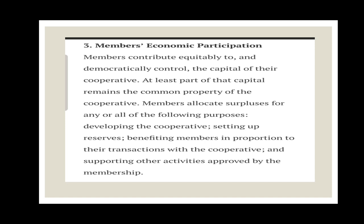The third principle is member economic participation. Cooperative societies are established for giving financial assistance to agricultural development, and for that they require funding. Every member should contribute some amount, and the contribution should be equitable. Members contribute equitably to the democratic control and capital of their cooperative. At least part of the capital remains the common property of the cooperative. Members allocate the surplus for the following purposes: developing cooperatives, setting up reserves, benefiting members in proportion to their transactions, and supporting other activities.